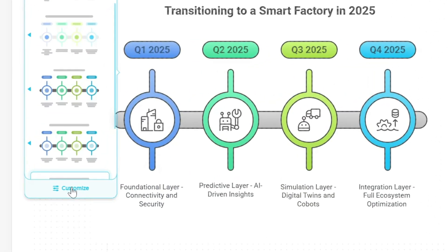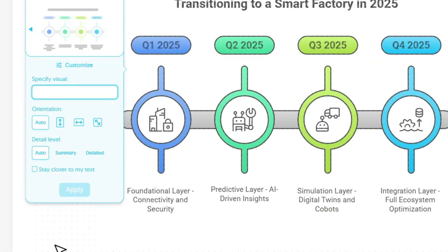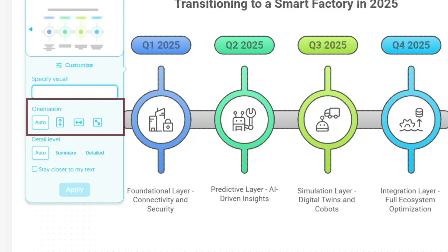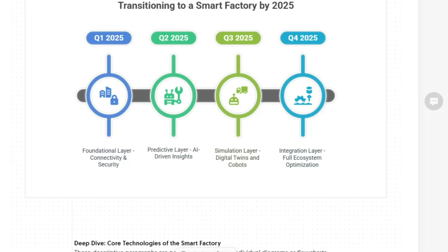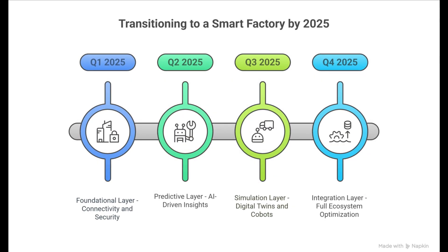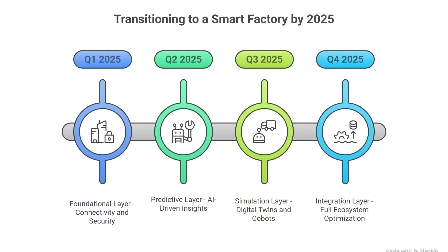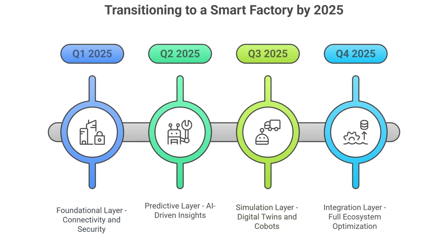If you want more options or something specific, click the Customize button to specify the visual type, orientation, and even the level of detail. I'll keep it as it is now. I love this visual — it's professional, crisp, and clearly communicates the meaning of the text.